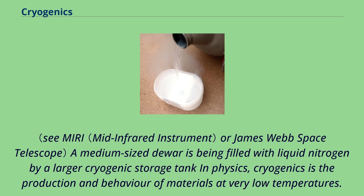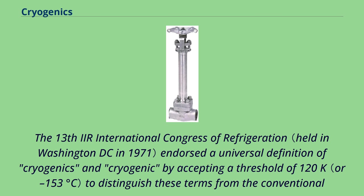For the James Webb Space Telescope, a medium-sized Dewar is being filled with liquid nitrogen by a larger cryogenic storage tank. In physics, cryogenics is the production and behavior of materials at very low temperatures. The 13th International Congress of Refrigeration endorsed a universal definition of cryogenics by accepting a threshold of 120K.